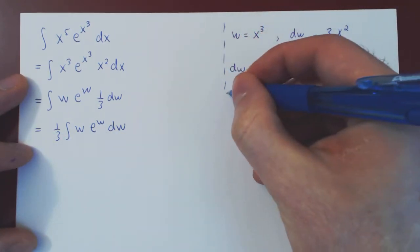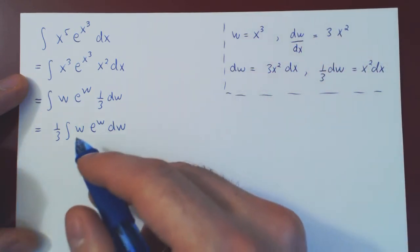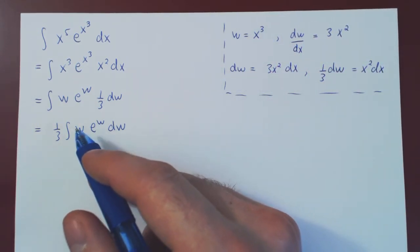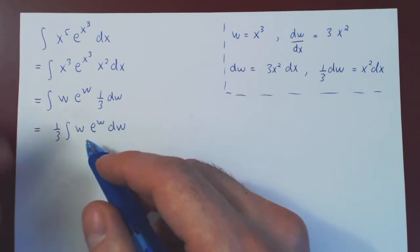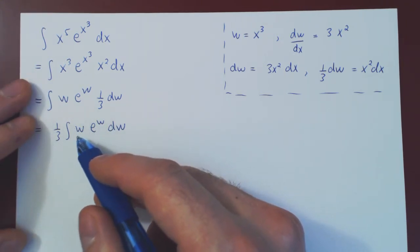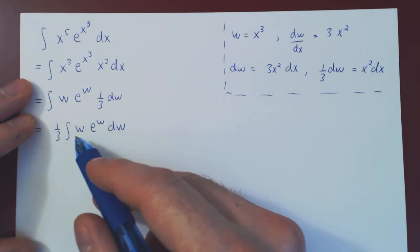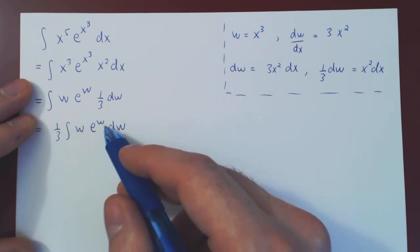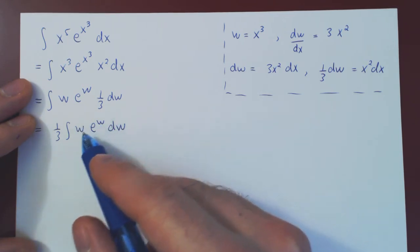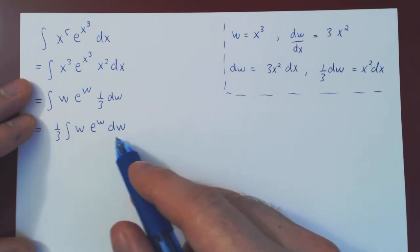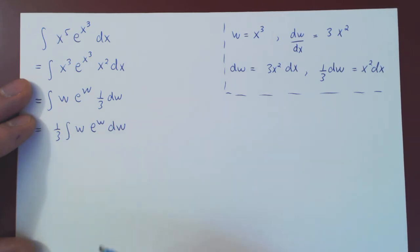But, the integral we have is still non-trivial. Now, it's still not clear what is the integral of w e to the w. But, if you differentiate w with respect to w, it's just 1, then it'd be gone. And then, you'd have a simple integral. So, this is hinting at integration by parts.